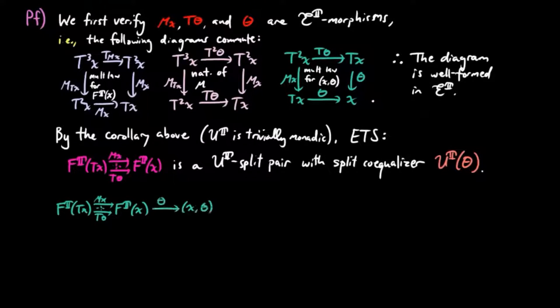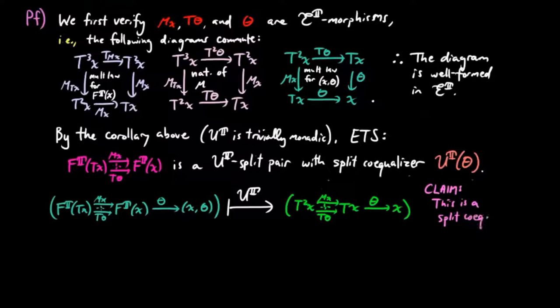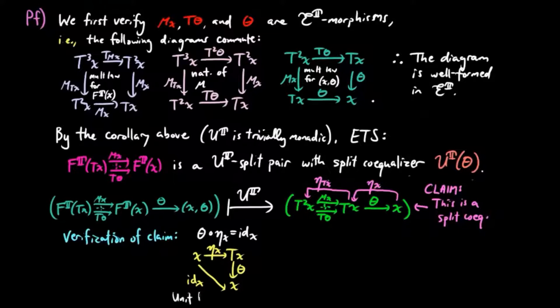We have the diagram above being taken to the following green diagram in E, and we claim that this is a split co-equalizer with splitting morphisms eta TX and eta X, where eta is a unit of the monad. So we need to verify the three equality conditions in the definition of a split co-equalizer.